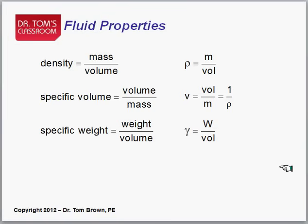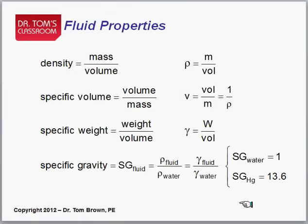And then the other specific, there's three specifics. The second one is specific weight, weight per volume, given the symbol gamma, G-A-M-M-A, W, weight over VOL. And then the last specific is specific gravity, given the symbol SG of a fluid. It is defined as the ratio of the density of the fluid to the density of water, or the specific weight of the fluid to the specific weight of water. And those are related because gravity is in there.